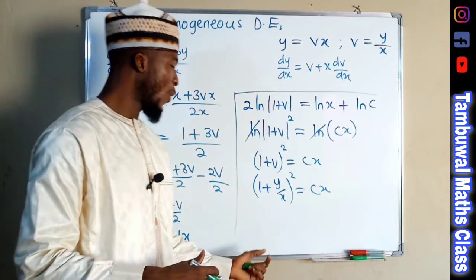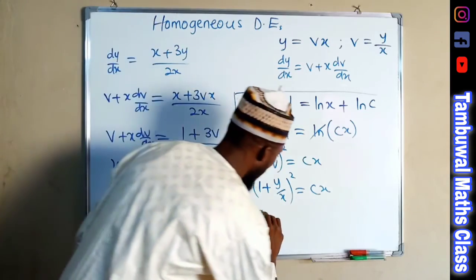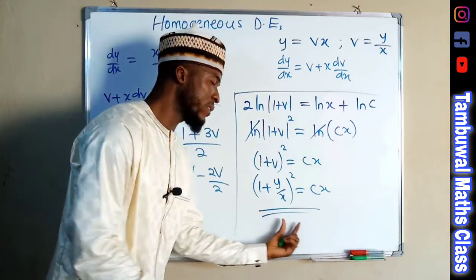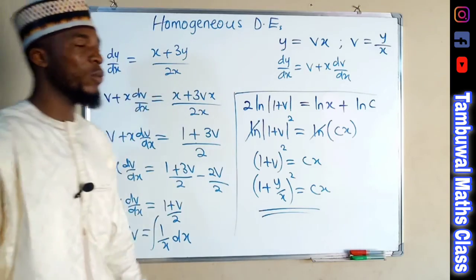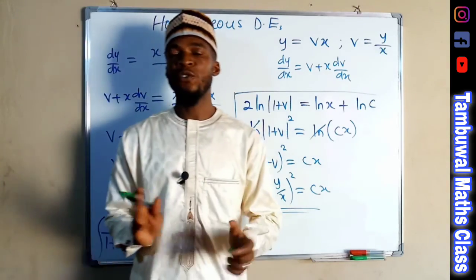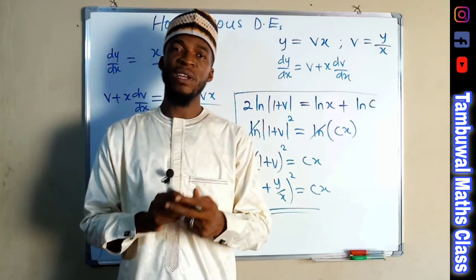Since v equals y over x, substituting back gives (1 plus y over x) squared equals cx. You can further simplify and write in terms of y and x, but this is the solution for this differential equation. That is all I have for you today. Thank you for watching — do have a nice day.